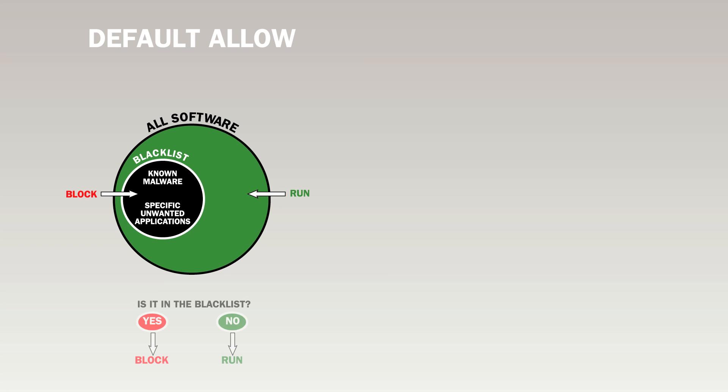There are two main approaches that application control software tends to use. The most common is default allow, also known as blacklisting. When the software takes that approach, everything is allowed to run on the network except the things known to be bad or specifically unwanted — those things can be listed and explicitly denied. So it's default allow: everything's allowed except the things we know we don't want.